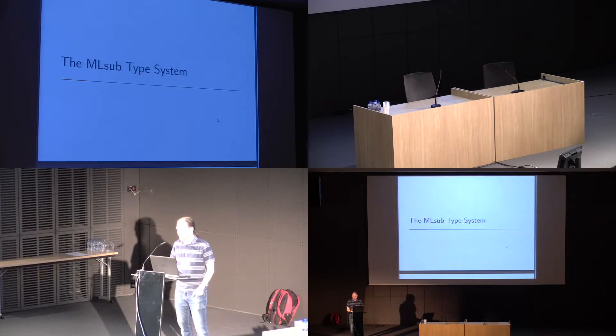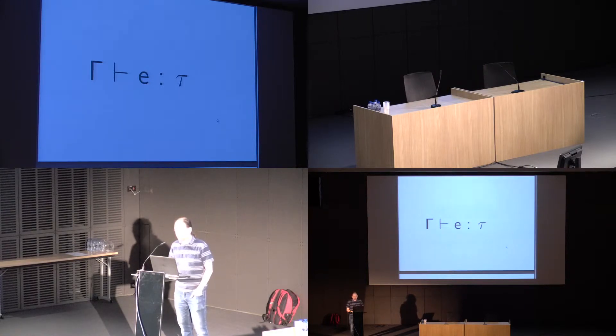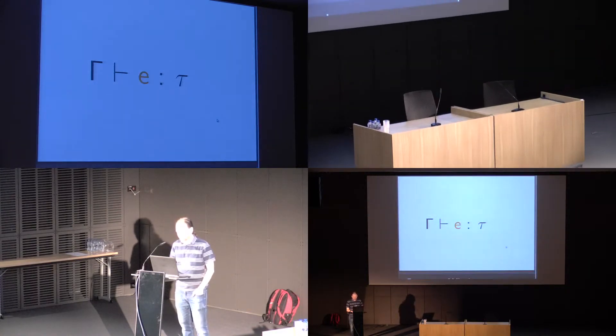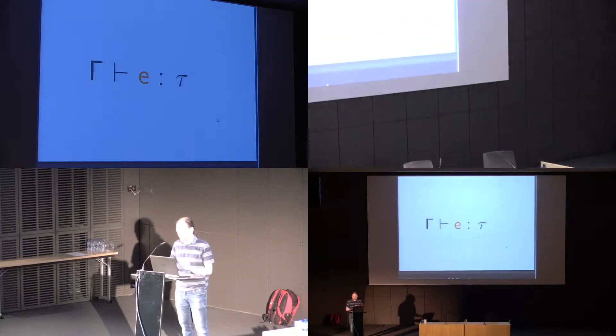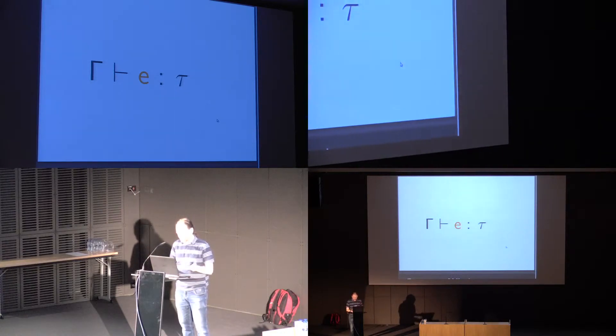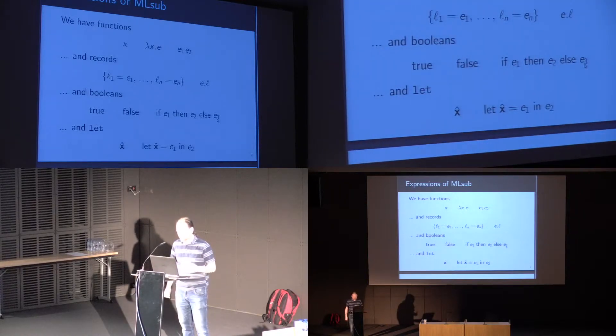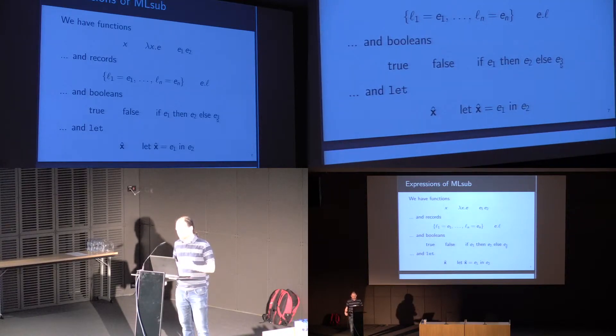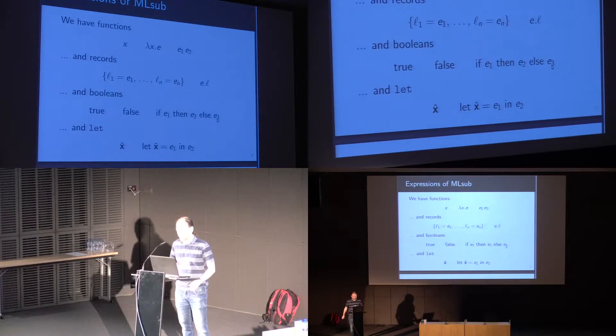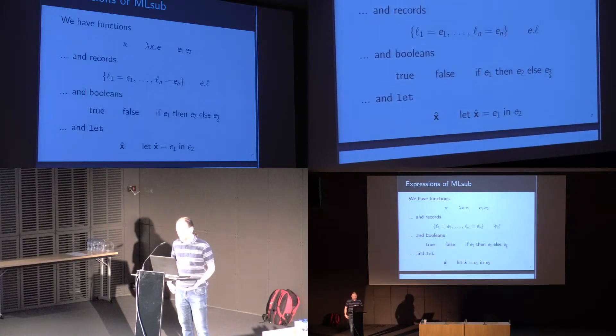Usually when someone stands up and starts describing a type system, they'll begin by telling you of all the fancy things they've added to the programming language, but this doesn't. The syntax of expressions is ML: there's functions, we've added records because records have more interesting subtypings than just functions, and booleans in order to have a base type.